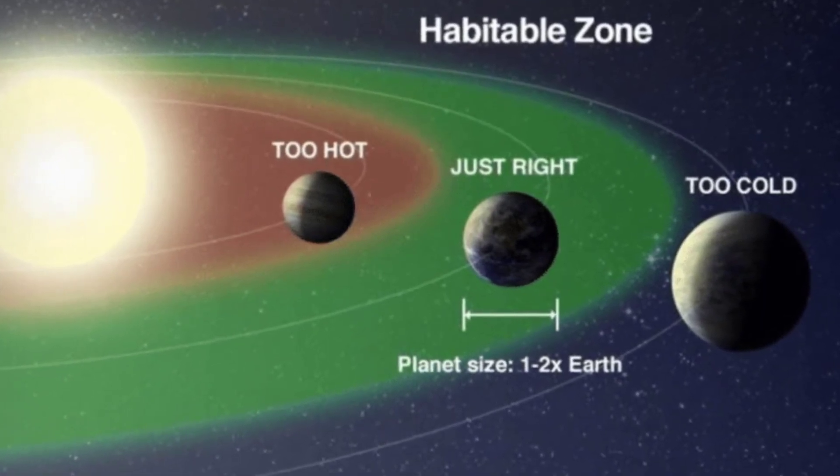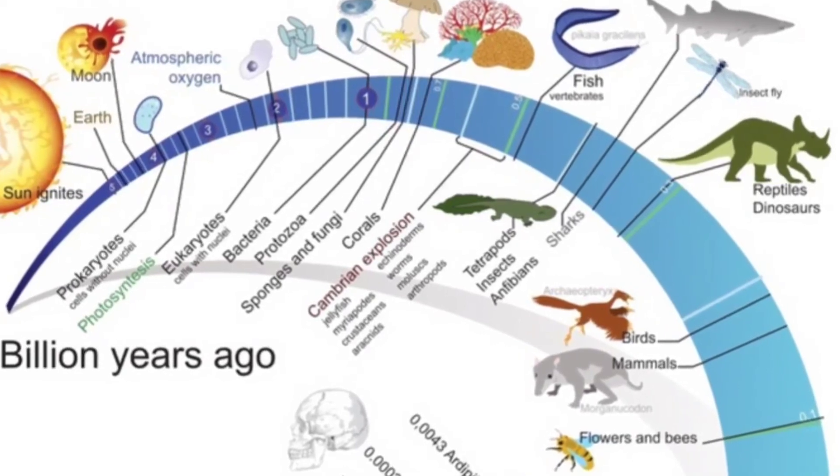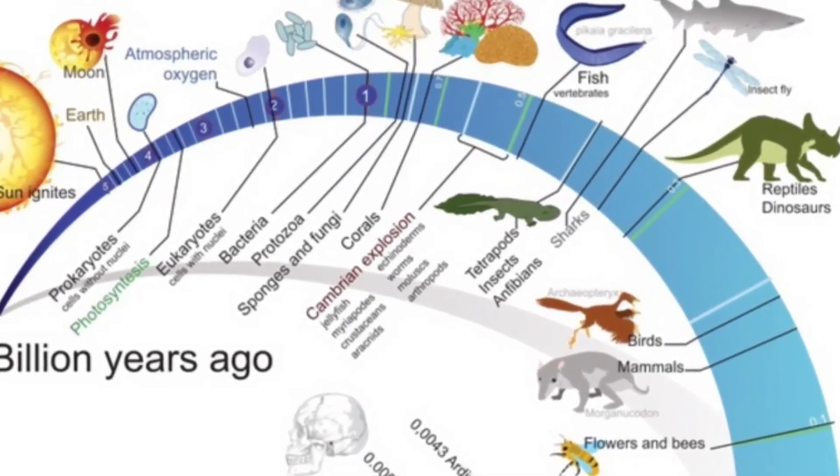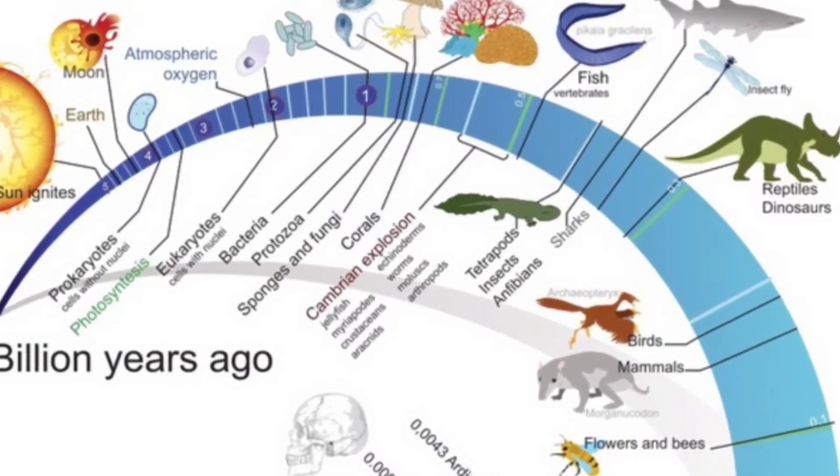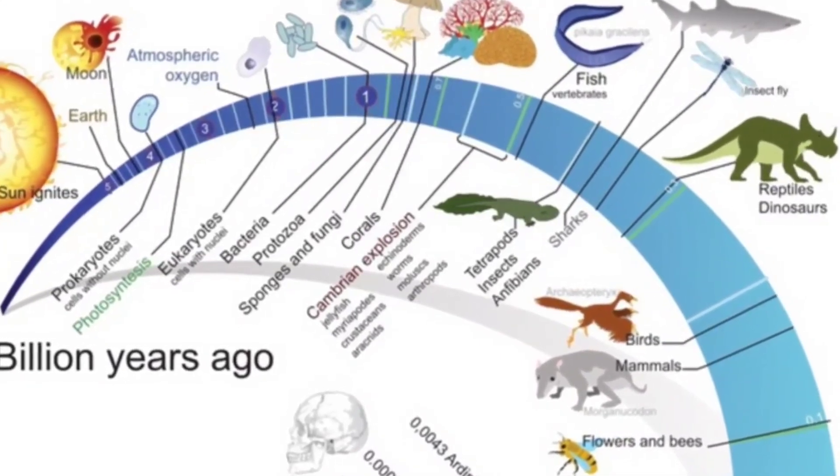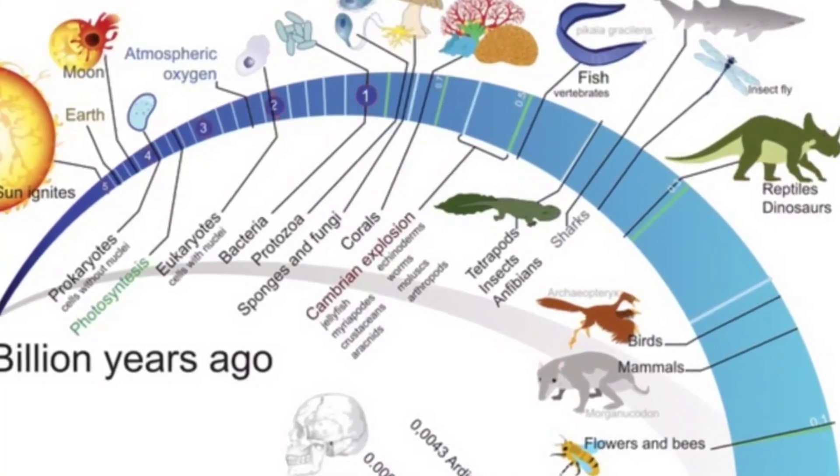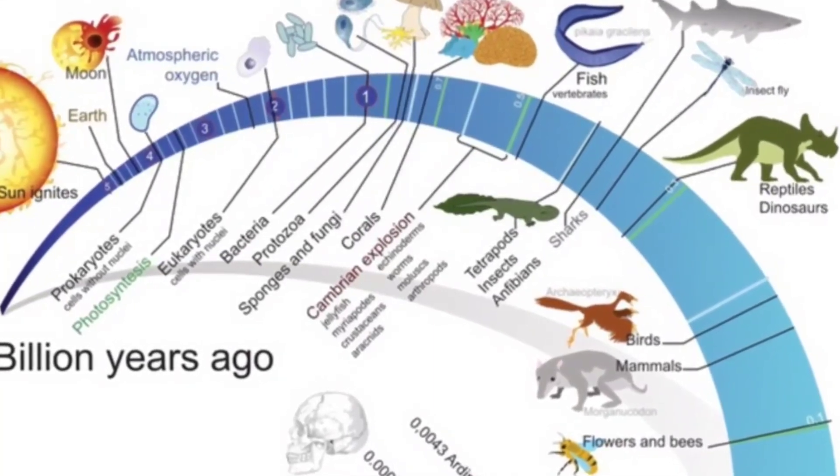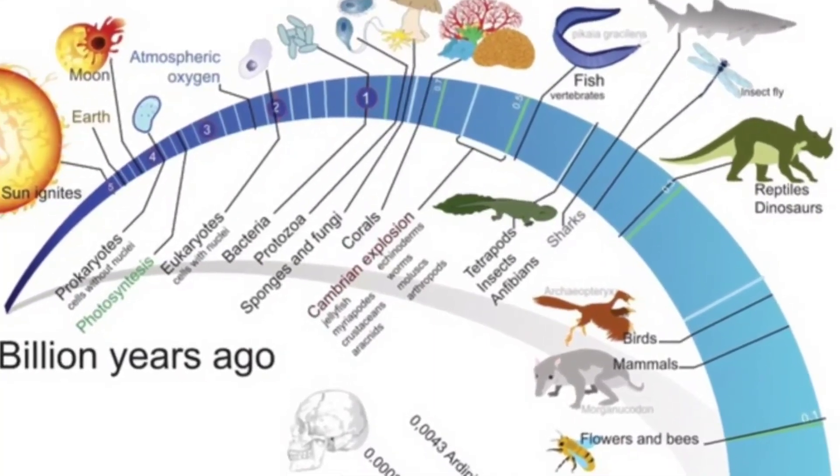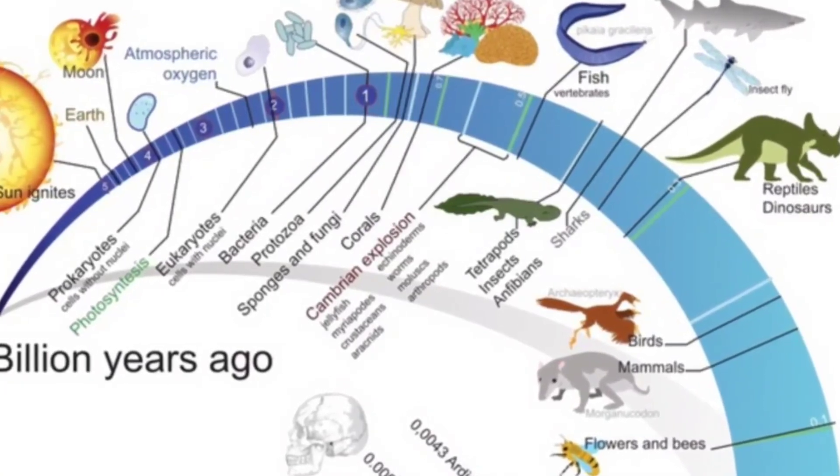The first organisms on Earth were extremely primitive and are thought to have lived in an atmosphere composed mostly of water vapor and carbon dioxide with a small amount of other gases but no free oxygen. But microorganisms evolved and released oxygen into the atmosphere by the process of photosynthesis.